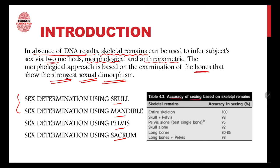Here is a table showing the accuracy of sexing based on skeletal remains. If studying the entire skeleton, there is 100% accuracy. Skull and pelvis together gives 98% accuracy. The pelvis alone is the best single bone, giving up to 95% accuracy. The skull alone gives 92% accuracy. Long bones give 80–85% accuracy, and long bones with pelvis gives 98% accuracy.